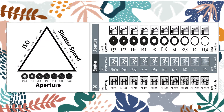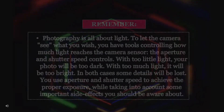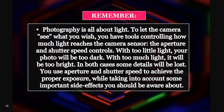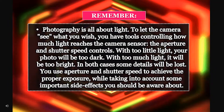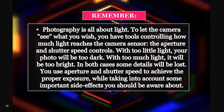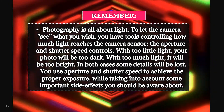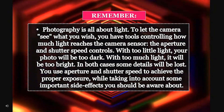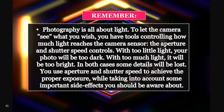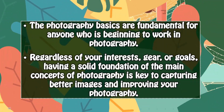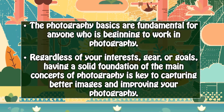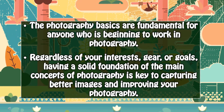Be guided by these diagrams. Remember, photography is all about light. To let the camera see what you wish, you have tools controlling how much light reaches the camera sensor — the aperture and shutter speed controls. With too little light, your photo will be too dark; with too much light, it will be too bright. In both cases some details will be lost. You use aperture and shutter speed to achieve the proper exposure, while taking into account some important side effects. The photography basics are fundamental for anyone beginning to work in photography. Regardless of your interests, gear, or goals, having a solid foundation of the main concepts of photography is key to capturing better images and improving your photography.